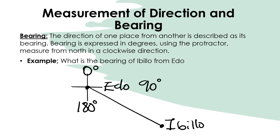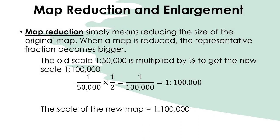This brings us to map reduction and enlargement. Map reduction simply means reducing your map from its original size. When a map is reduced, the representative fraction becomes bigger. For example, if the scale of your map is 1:50,000 and you multiply by a half, the new scale changes accordingly.